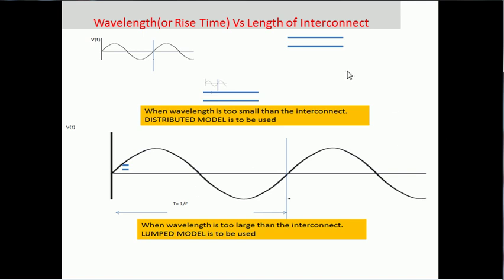This is a graphical way to understand it. Suppose, this is the length of the interconnect and this is the wavelength of the signal. If the length of the interconnect is greater than the wavelength of the signal, you can clearly see we can have different potential. So, you cannot consider it to be a lumped model. You have to go for a distributed model analysis.